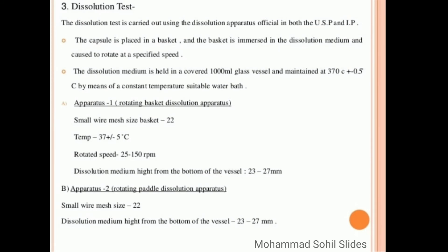Then Apparatus 1, which is rotating basket dissolution apparatus—for this, small wire mesh is required and the size of basket is 22. At rotating speed of 25 to 150 rpm, dissolution medium height from the bottom of the vessel is 23 to 27 mm. Then Apparatus 2, rotating paddle.